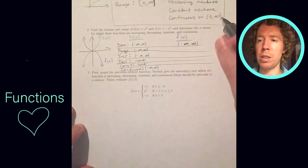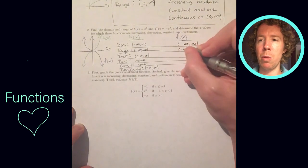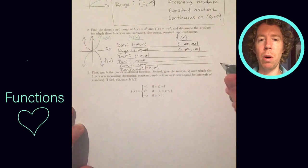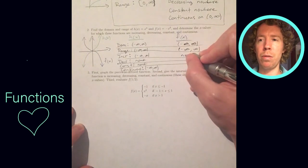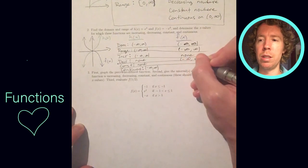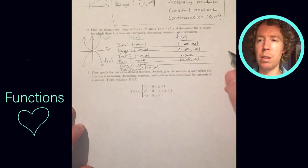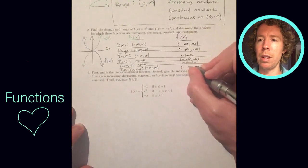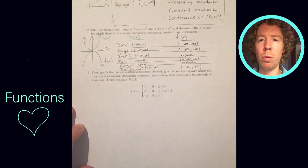If you look at f of x, though, and you think about where it's increasing, as you move from left to right on f of x, your y values go down forever. They don't ever go up. So it's not increasing anywhere. It's decreasing on the entire domain. It's never constant, and then it is continuous everywhere as well.